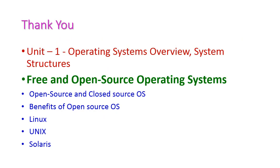We have seen the free and open source operating systems from the first unit of the operating system subject. Under this we covered open source and closed source operating systems, the benefits of open source, and the Linux, Unix, and Solaris operating systems. In the next class we will see another important topic from the first unit. Thank you.